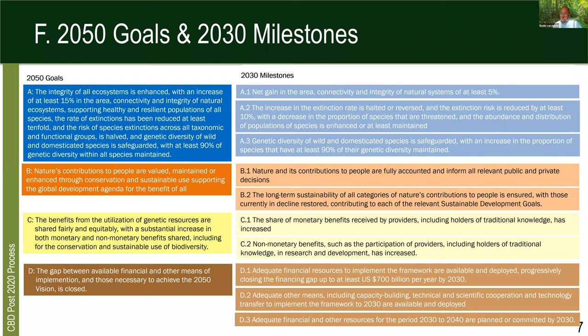Goal D may seem innocuous but carries a lot of weight — it's around how we're going to make financial tools and finance work under that context. Practically this means closing the gap progressively up to 700 billion dollars by 2030, and also making sure that finance is ready for the next decade by the end of the period.